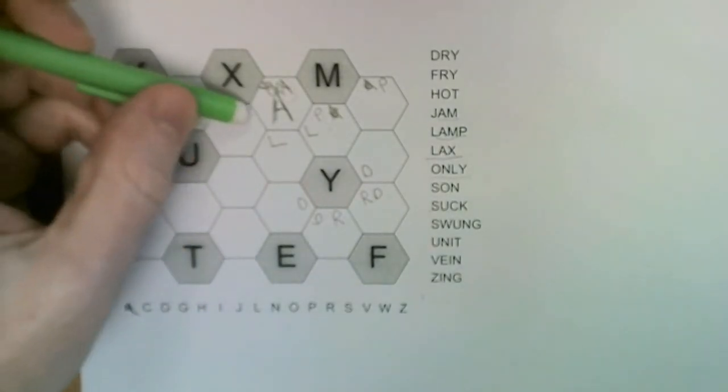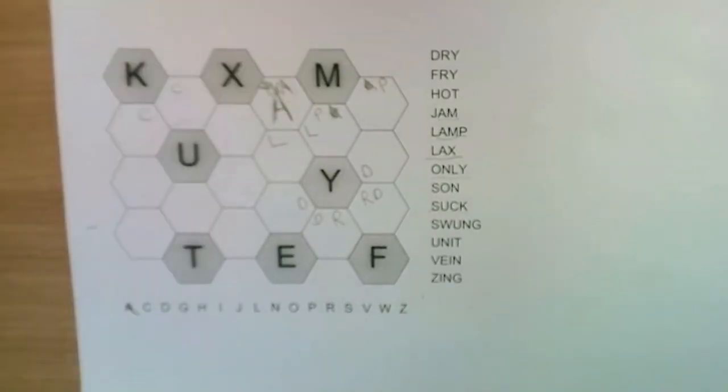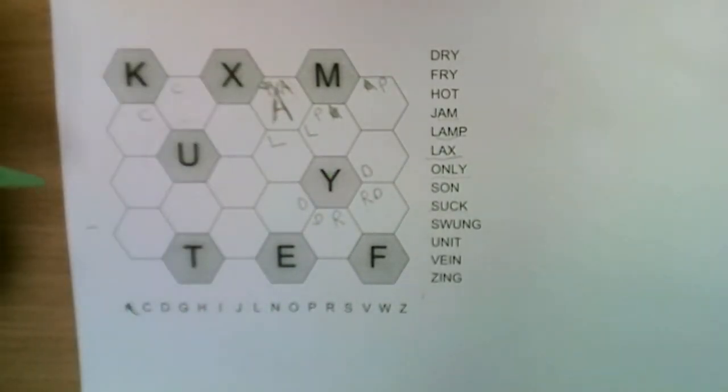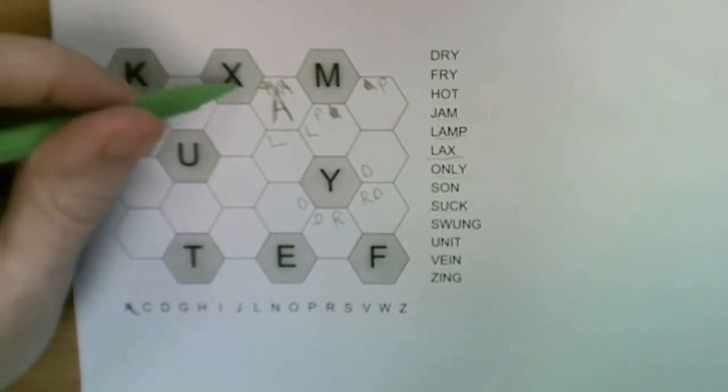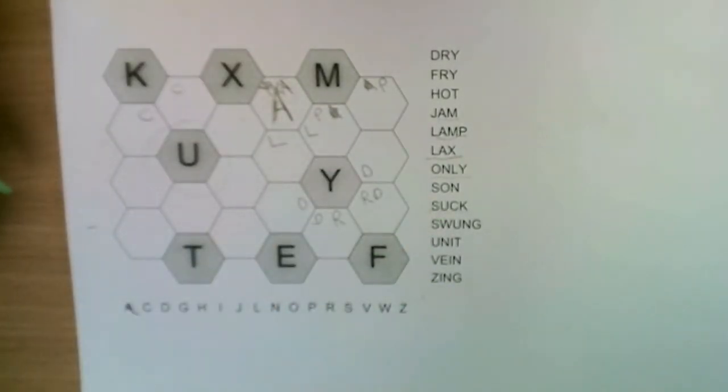Looking here, only the L also has to neighbor the Y, so that means that can't be the L. It must be here or here to neighbor the Y.